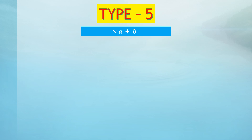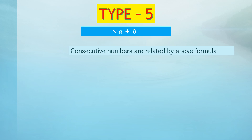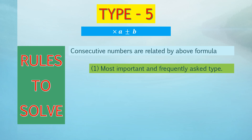In today's video we are going to discuss one of the most important types of number series problems: the 'multiplied by a plus/minus b' type format. In this format, consecutive numbers are related by two parameters — a multiplicative parameter and an additive parameter, a and b. These are the most frequently asked type, and they are not easy; you require lots of practice to solve them within a stipulated amount of time.